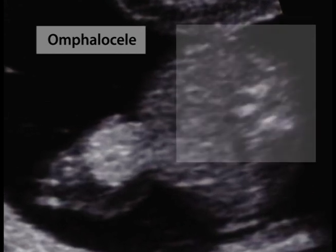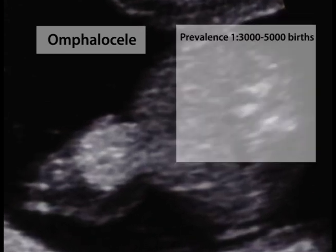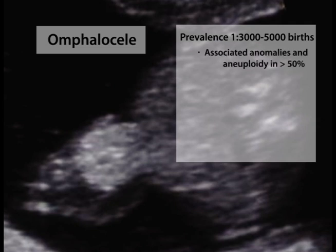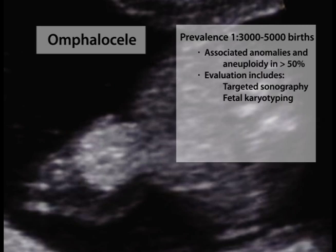Omphalocele complicates approximately 1 in 3,000 to 5,000 births. In more than 50% of cases, omphalocele is associated with other major anomalies or aneuploidy. Thus targeted sonography is indicated and fetal karyotyping should be offered. Omphalocele is also a component of syndromes such as Beckwith-Wiedemann, cloacal extrophy, and pentalogy of Cantrell.